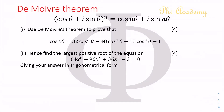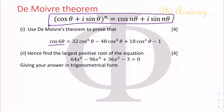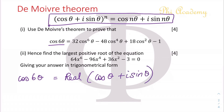So using De Moivre's theorem, let's prove that cos 6θ is equal to 32cos⁶θ minus 48cos⁴θ plus 18cos²θ minus 1. We can see that only the real part of this expansion will have the cos terms, and the imaginary part will have the sine terms. So cos 6θ can be obtained by finding the real part of (cos θ + i sin θ), and because this is 6θ we are going to raise this to the power of 6.